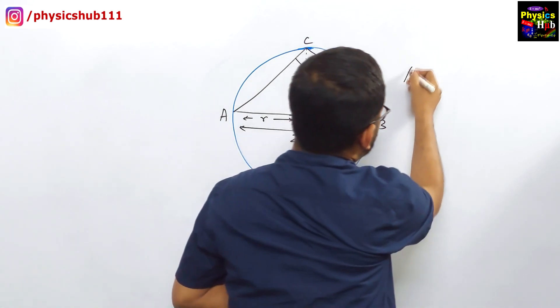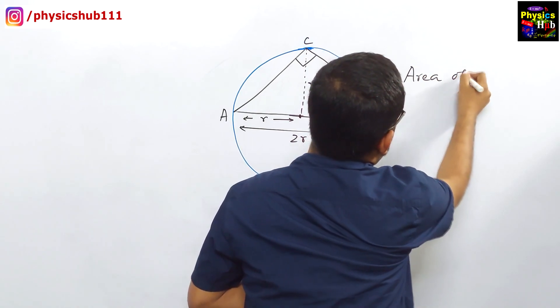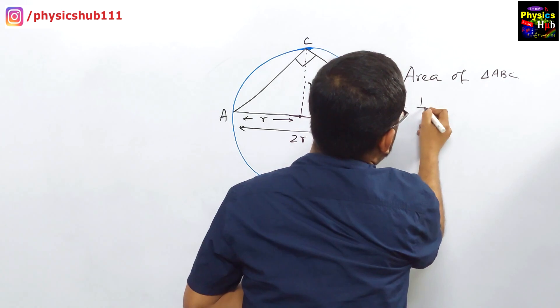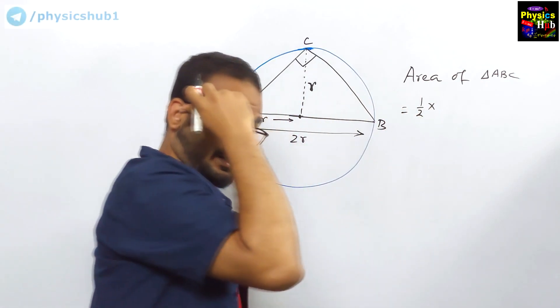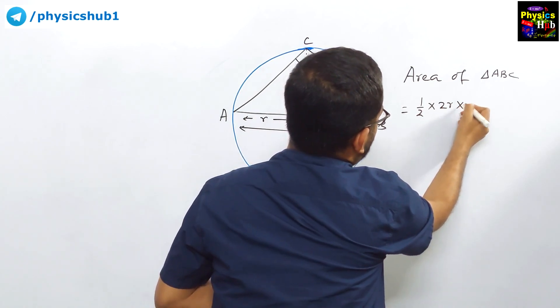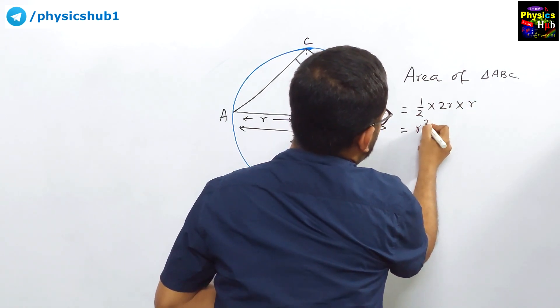Now what is the area of this triangle? Area of the triangle ABC, you know, half into base into height. What is the base? 2r. What is the height? r. So it is nothing but r squared.